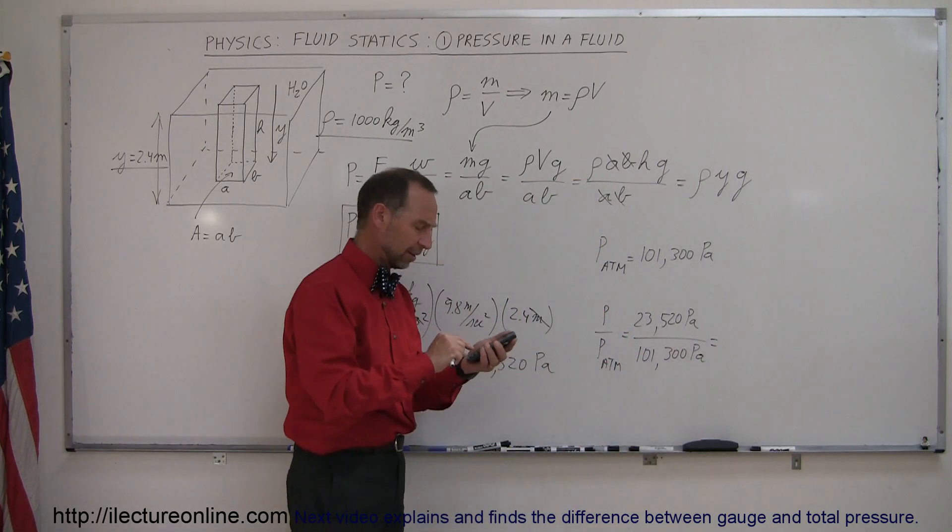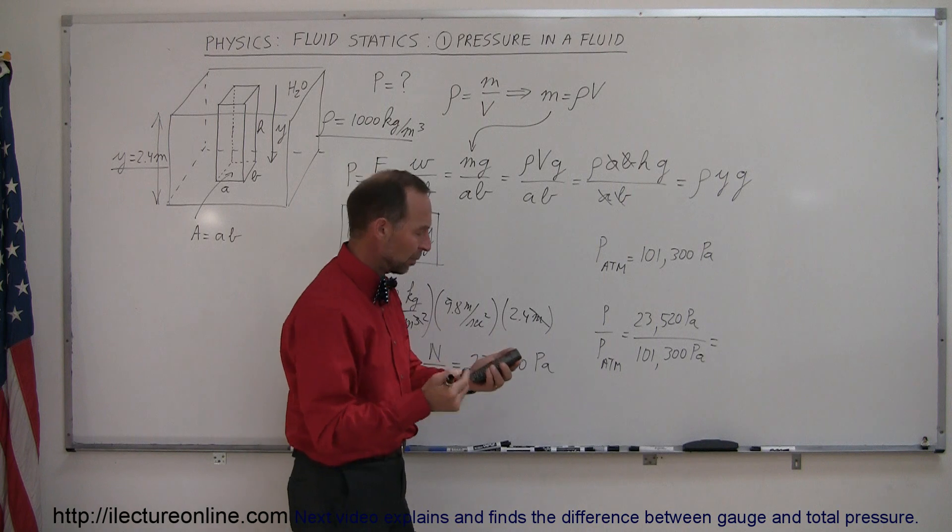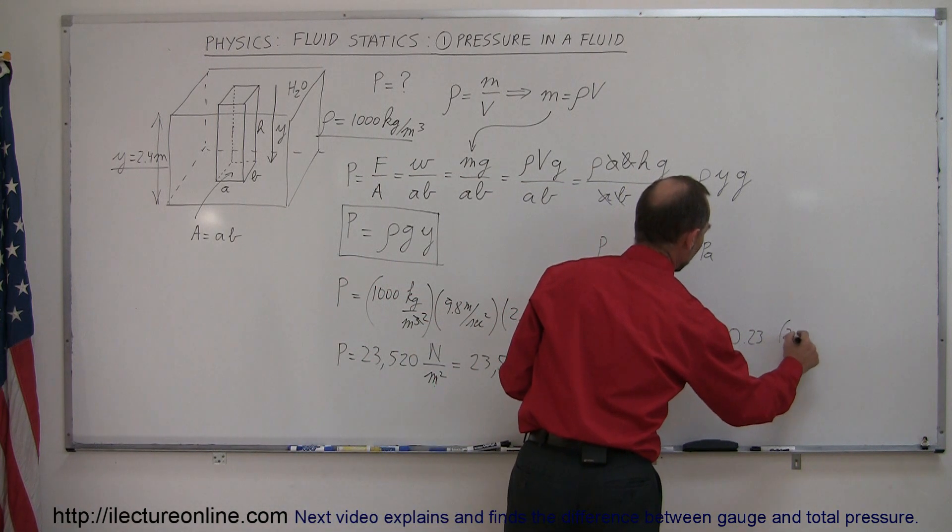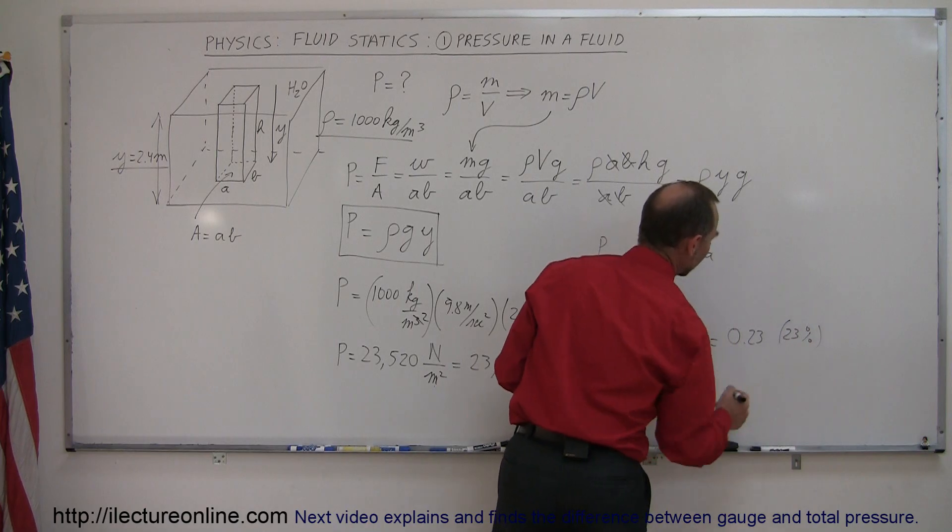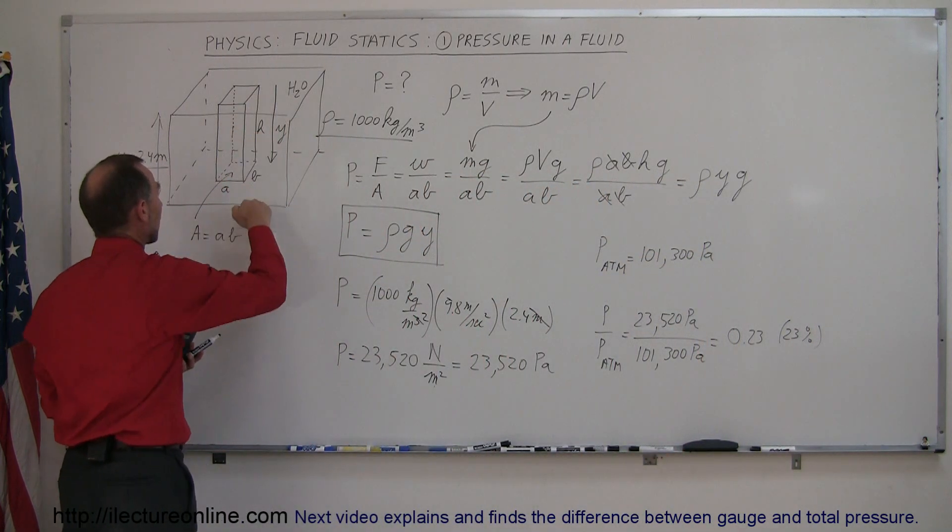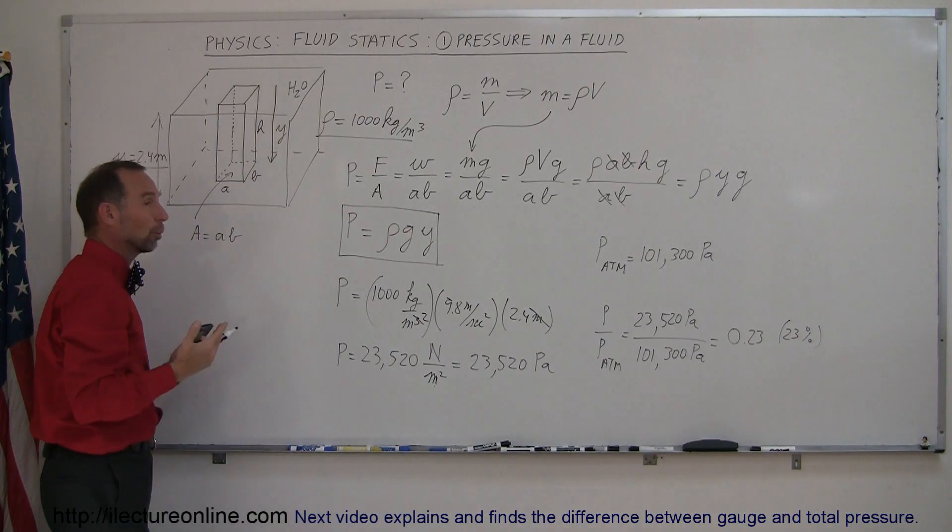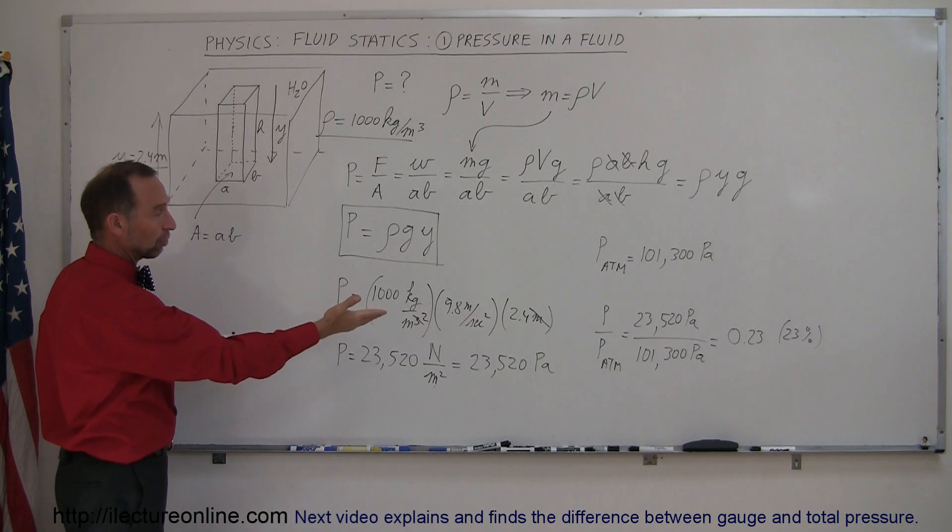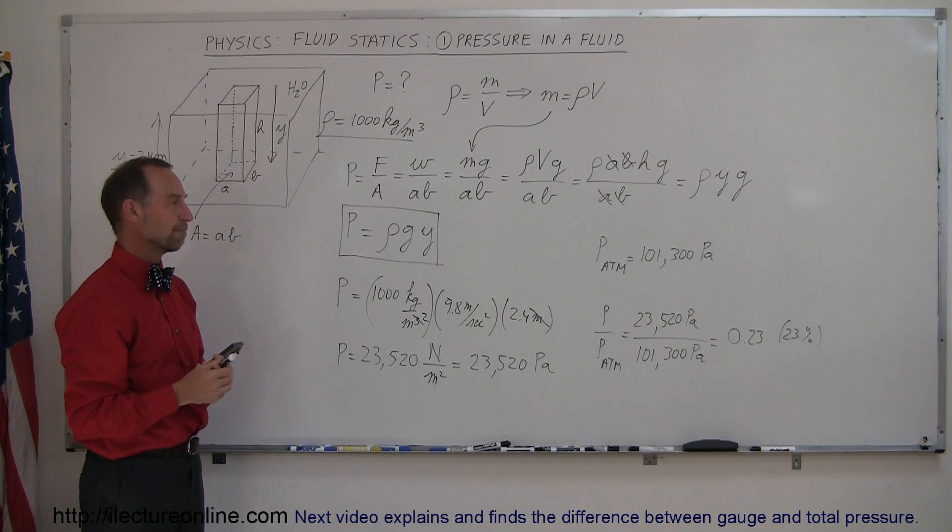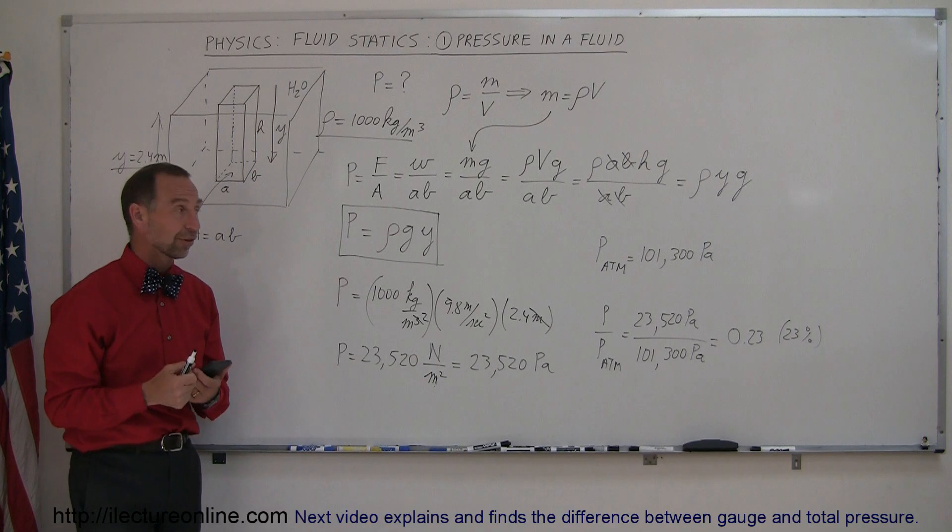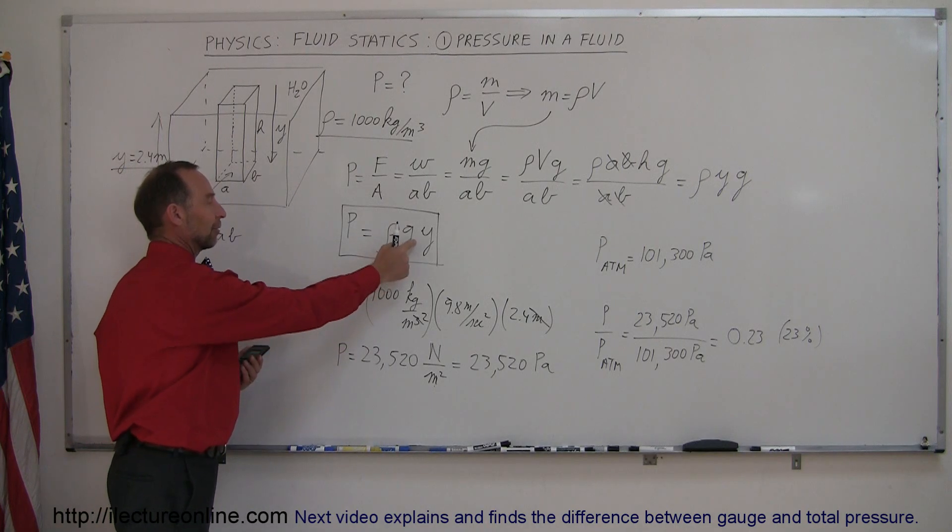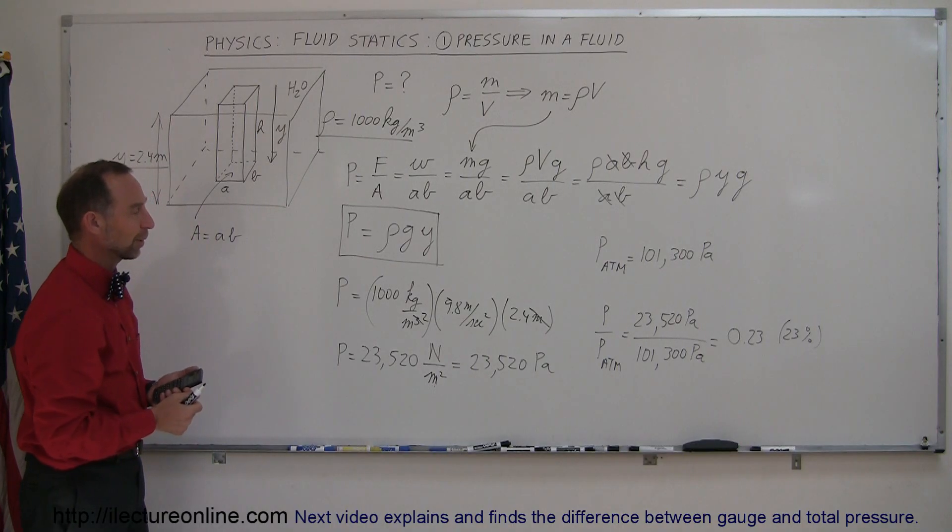So if we do that, divided by 101,300, we can see that this is equal to 0.23 or 23% of atmospheric pressure, which means when you dive into a pool and you swim to the bottom of the pool, and let's say the pool is about 2.4 meters deep, then you experience the pressure of about 23% of atmospheric pressure. And that's how you find the pressure inside any fluid at any depth, knowing the density of the fluid, and of course being on the earth, g is 9.8 meters per second squared.